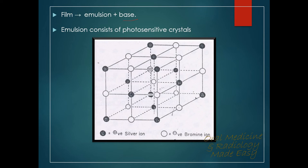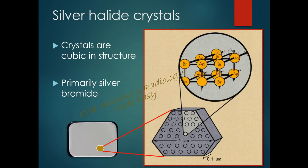Iodine is added because the difference in dimension between bromine and iodine atoms creates imperfections in the crystal surface, which increases the sensitivity of the crystals. So a small amount of iodine is also added to the silver bromide crystals. The silver halide crystals are cubic in structure and are primarily silver bromide with some silver iodide also present. This is the silver halide cubic structure, and numerous such cubics are present in an x-ray film.